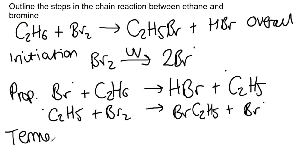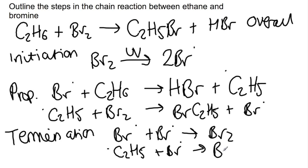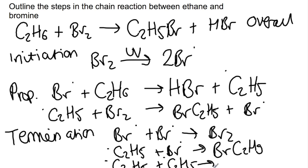The final three termination steps are: two bromine radicals coming together to form bromine; the ethyl radical and a bromine radical joining to produce bromoethane; and finally two ethyl radicals joining together to give butane.